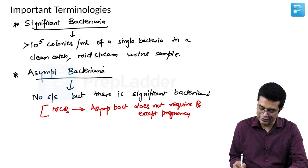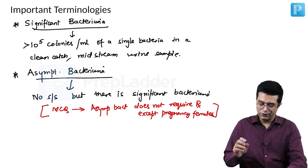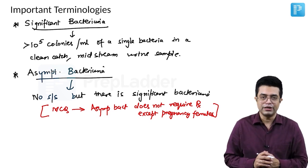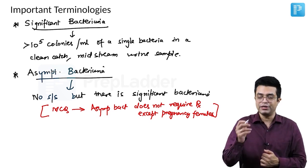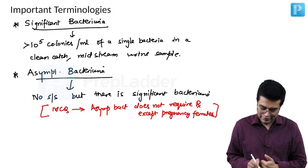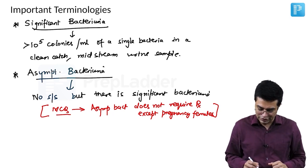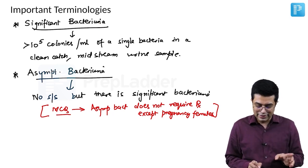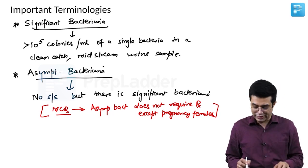Asymptomatic bacteriuria does not require therapy, does not require therapy except in cases of pregnancy. So whether it is a newborn, child, adult, old age, we do not treat asymptomatic bacteriuria except pregnant females where it needs to be treated. It is a past MCQ. First definition is significant bacteriuria. Second definition or terminology is asymptomatic bacteriuria.